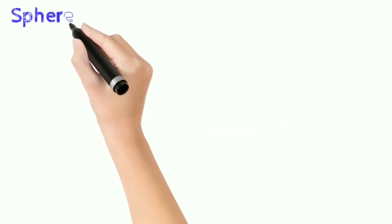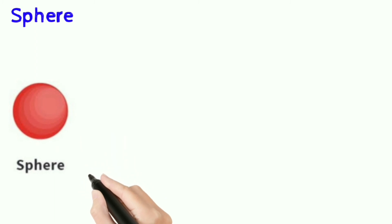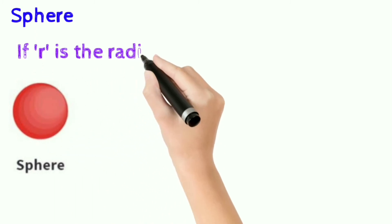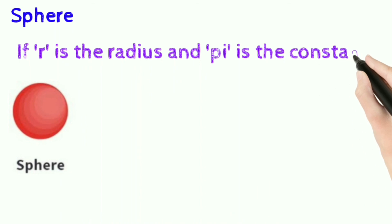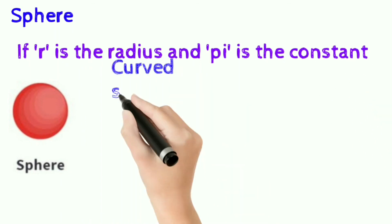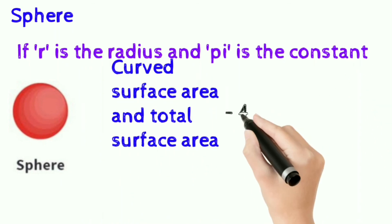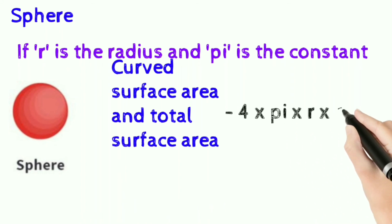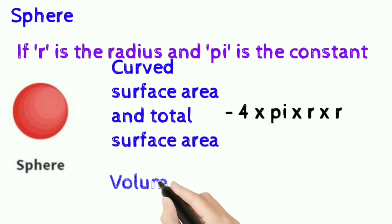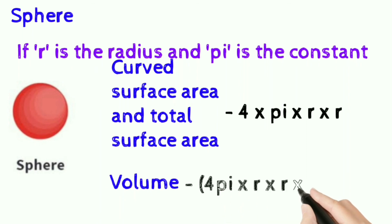Sphere: if r is the radius and pi is the constant, curved surface area and total surface area are equal to 4π into r squared. Volume is 4πr cubed divided by 3.